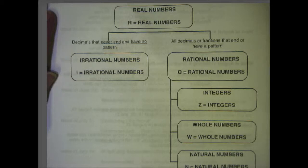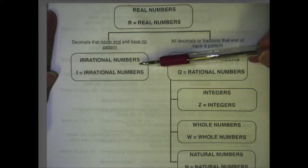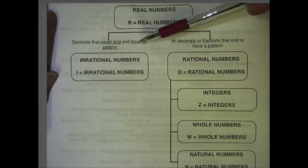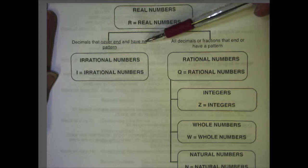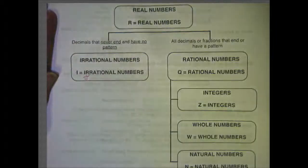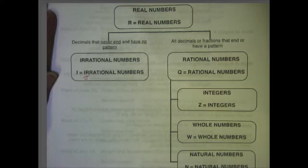Real numbers include two different sets of numbers: irrational numbers and rational numbers. Irrational numbers are decimals that never end and have no pattern. One of the ones that you're going to see most often is the number pi. We all know that we generally round that to 3.14, but it is actually a decimal that never repeats and never ends — it never has any sort of a pattern.